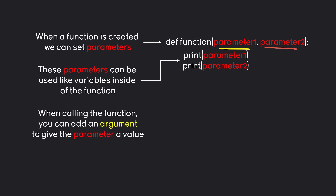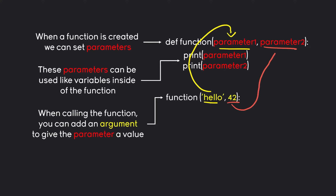When we are calling the function we are adding an argument to give the parameter a value. When I call the function and I pass in hello and 42, the first argument is going to be assigned as the value to the first parameter. The second argument will become the value for the second parameter, and after that we are using those two parameters like variables inside of the function. The output we would get in this example would be hello and 42.